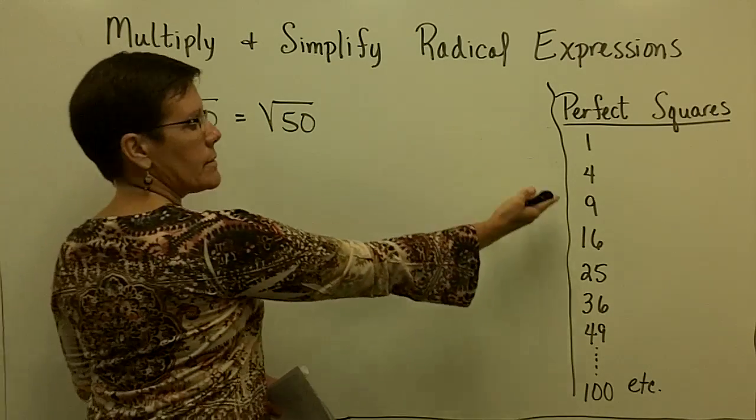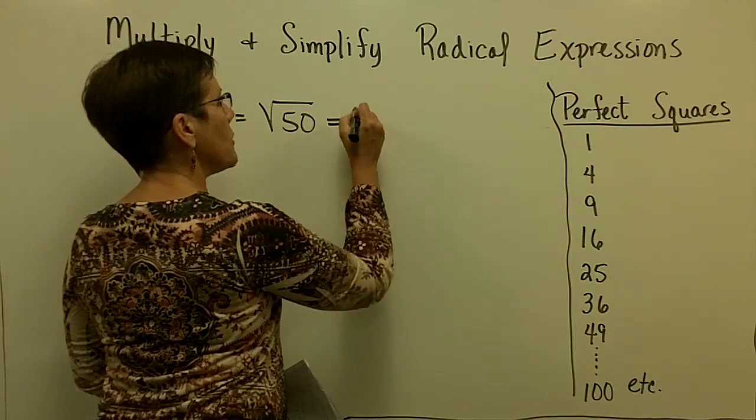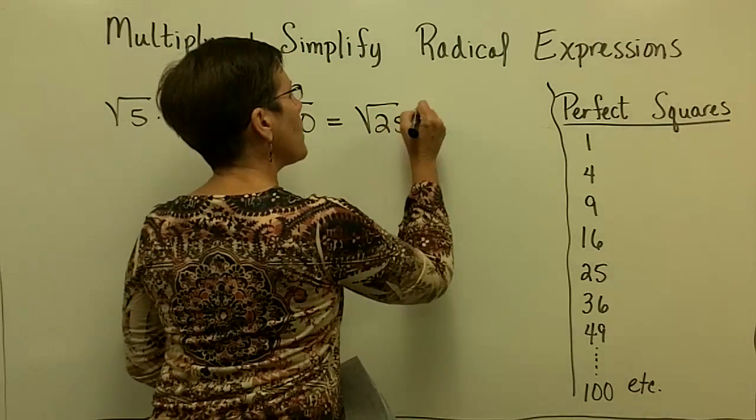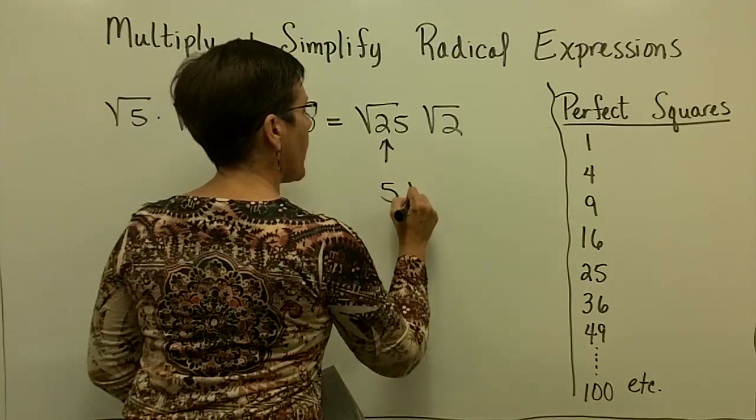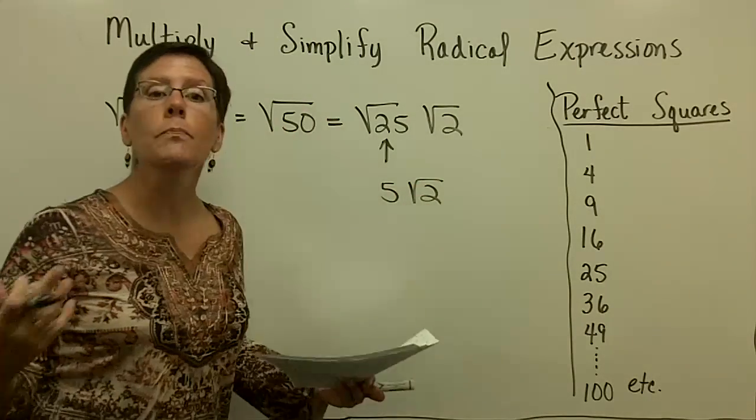And then I look in my list and I say, 25 goes into 50 evenly. I'm going to now think of that as 25 times 2, and that right there is equal to 5. Can't do anything with the square root of 2, and I'm all done.